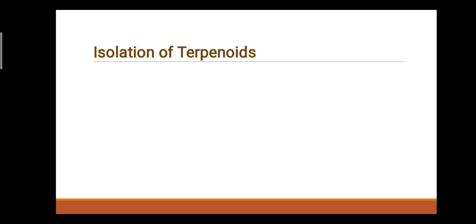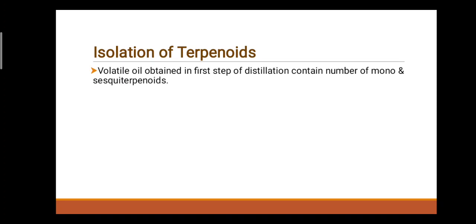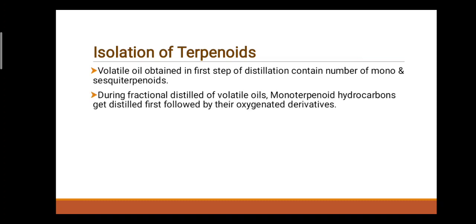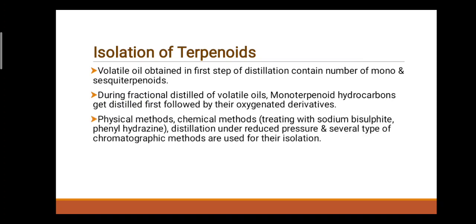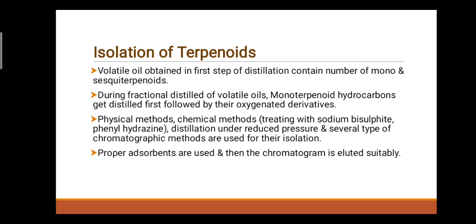Next point: Isolation of Terpenoids. Volatile oil obtained in the first step of distillation contains a number of mono- and sesquiterpenoids. During fractional distillation of volatile oils, monoterpenoid hydrocarbons get distilled first, followed by their oxygenated derivatives. Physical methods and chemical methods — such as treating with sodium bisulfate and phenyl hydrazine — are used. Then distillation under reduced pressure and several types of chromatographic methods are used for their isolation. Proper adsorbents are used and the chromatogram is eluted suitably.